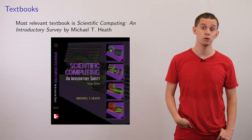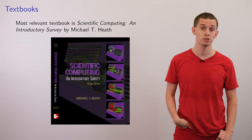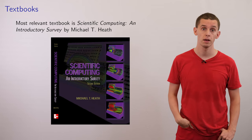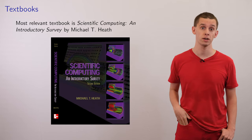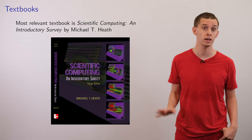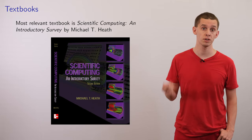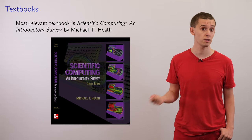So the most relevant textbook for the course is Scientific Computing Introductory Survey by Michael Heath. And this is an excellent introductory textbook that contains many long explanations of many of the key ideas. And a lot of the material for the course is kind of structured similarly to Heath.